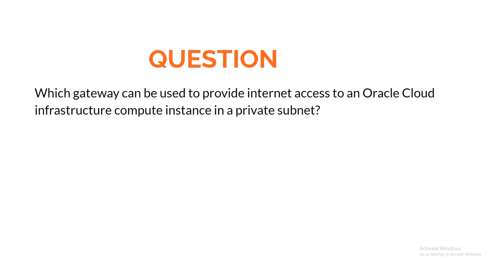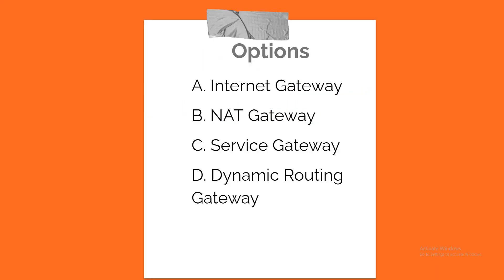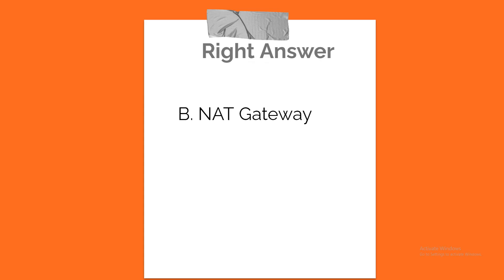Question. Which gateway can be used to provide internet access to an Oracle Cloud Infrastructure compute instance in a private subnet? A. Internet Gateway. B. NAT Gateway. C. Service Gateway. D. Dynamic Routing Gateway. Correct answer: B. NAT Gateway.